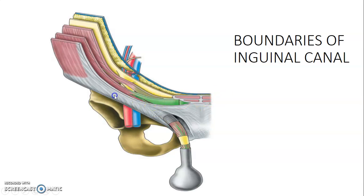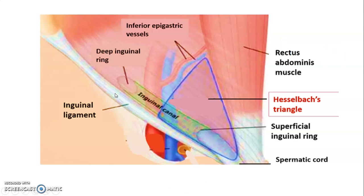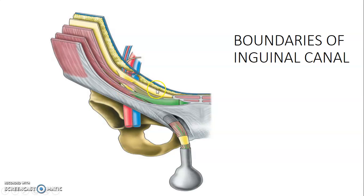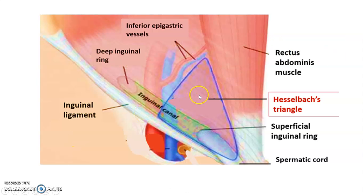Regarding the inguinal canal boundaries: anteriorly you have the external oblique aponeurosis with the internal oblique muscle laterally; inferiorly you have the inguinal ligament and the lacunar ligament; medially and superiorly you have the internal oblique and transversus abdominis muscles; while posteriorly you have the conjoint tendon of internal oblique and transversus abdominis together with the fascia transversalis.